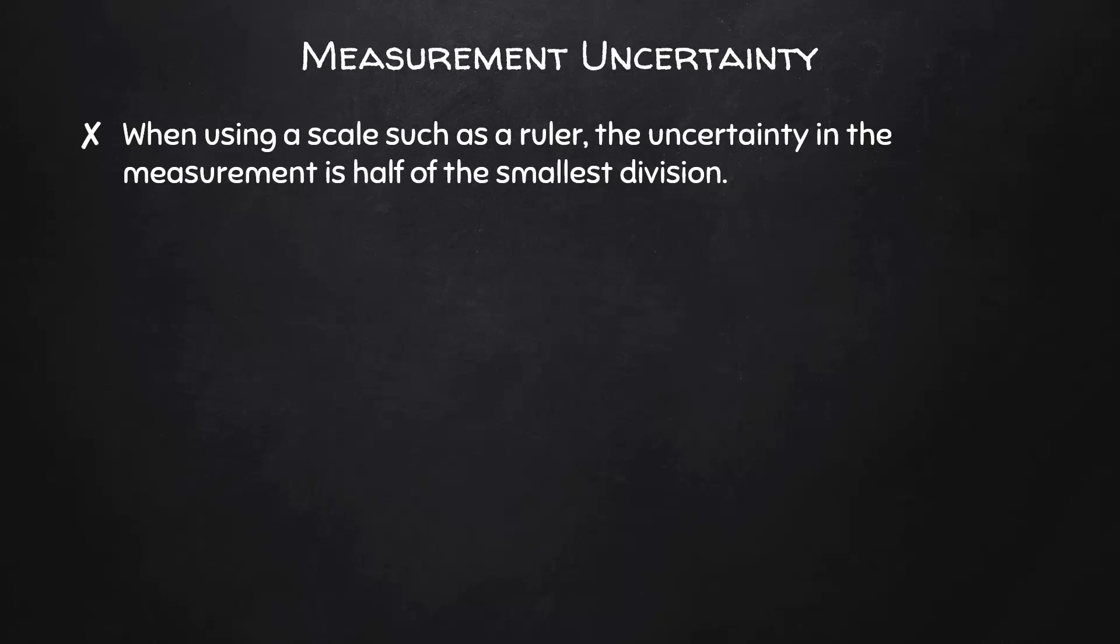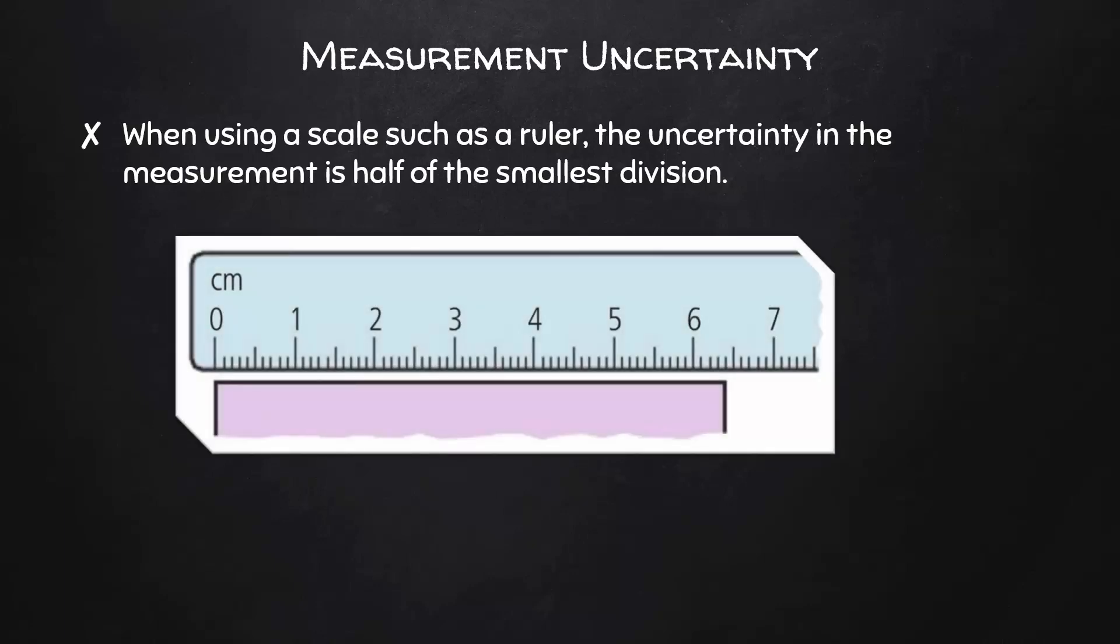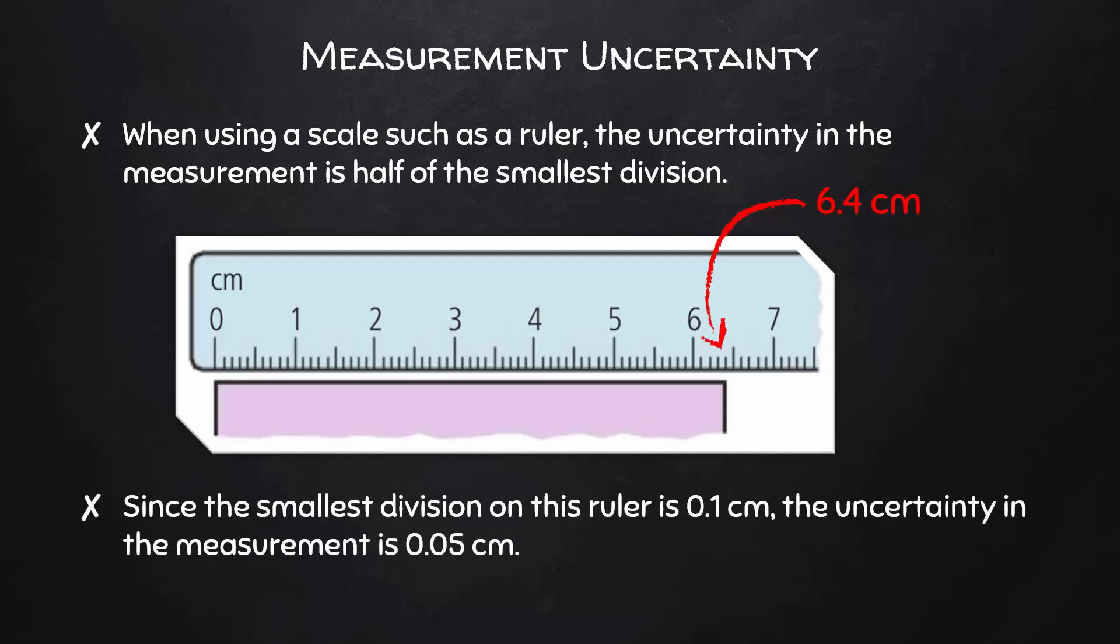When using a tool with a scale, such as a ruler, the uncertainty in the measurement is half of the smallest division. To the best of our ability, we would measure the side of this rectangle to be 6.4 cm, and since the smallest division on this ruler is 0.1 cm, the uncertainty in the measurement is 0.05 cm. We would express this measurement with uncertainty as 6.4 ± 0.05 cm.